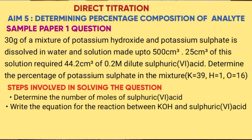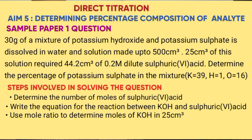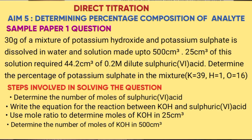The equation is only between potassium hydroxide and dilute sulphuric acid. Step 3 — use the mole ratio to find the number of moles of potassium hydroxide in 25 cm³. Step 4 — determine the number of moles of potassium hydroxide in 500 cm³, because the 30 grams of the mixture was dissolved in 500 cm³.